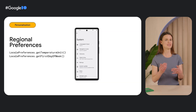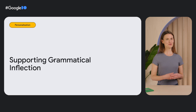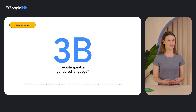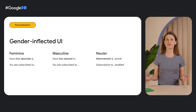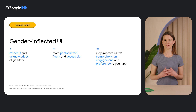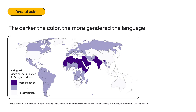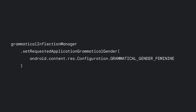Also, for user customization of regional preferences such as temperature or days of the week, see the new backward-compatible Locale Preferences library. The new Grammatical Inflection API in Android 14 helps create a personalized UI for all users. Three billion people speak a gendered language, in which words inflect or change according to the gender of the person being referred to. The default inflection is often masculine, but this may feel less relatable to some users. According to experts, a gender-inflected UI respects all genders and may improve users' comprehension, engagement, and preference for your app. In Android 14, use the Grammatical Inflection API to create new gender-qualified string resources such as feminine, masculine, and neuter alternatives, then use the Grammatical Inflection Manager to set the application to the correct grammatical gender for your user.